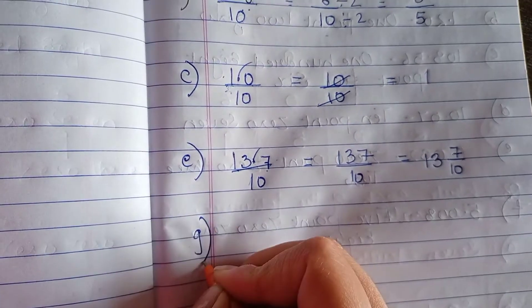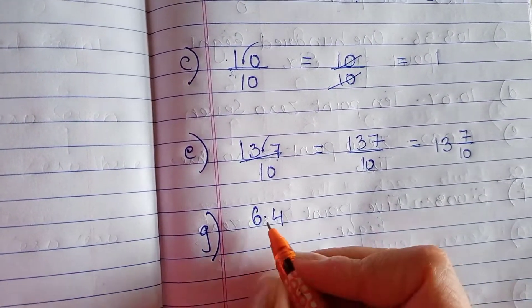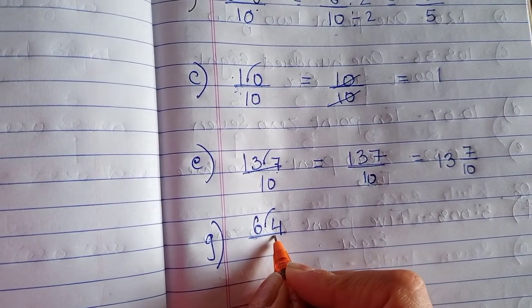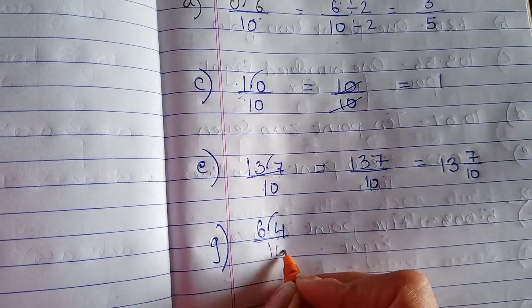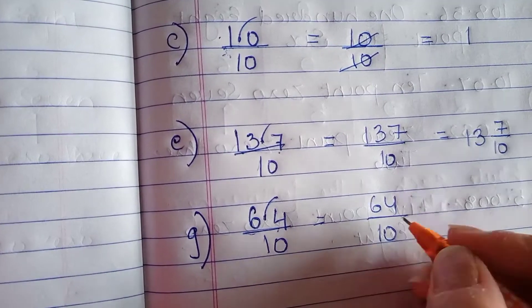Let me do one more H part. That is 6.4. What is the first step? First step is to remove the decimal. How many numbers are there? One number after decimal. 1 0 will come. 64 upon 10. Reduce to lowest fraction.